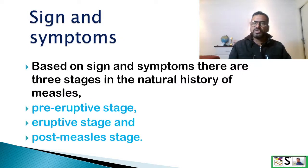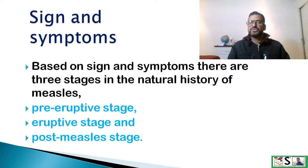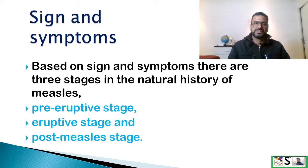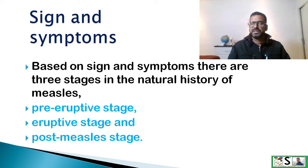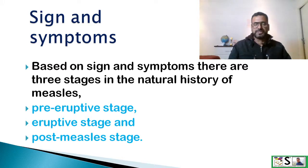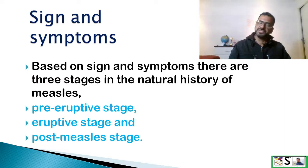What are the signs and symptoms of measles? Based on the signs and symptoms, there are three stages of measles: the pre-eruptive stage, the eruptive stage, and the post-measles stage.